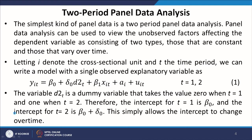The simplest kind of panel data is a two-period panel data analysis. Panel data analysis can be used to view the unobserved factors affecting the dependent variable as consisting of two types: those that are constant and those that vary over time. Panel data is a kind of data where the cross-section and the time series observations are basically brought together.